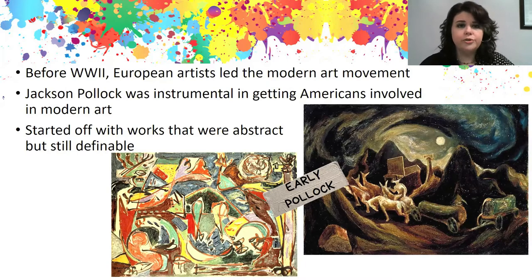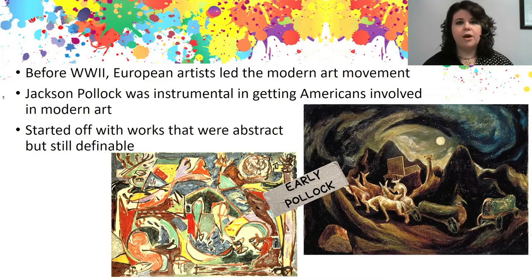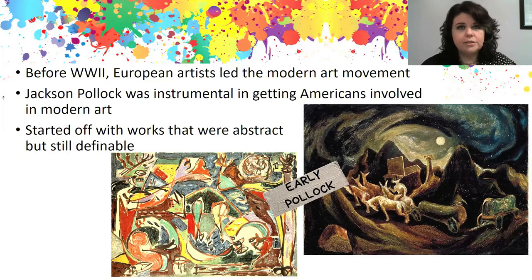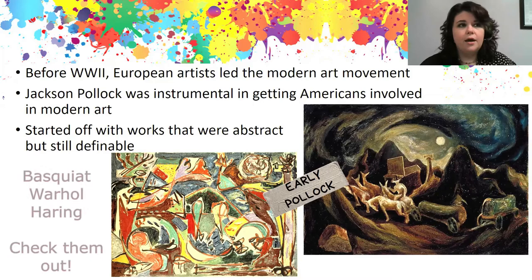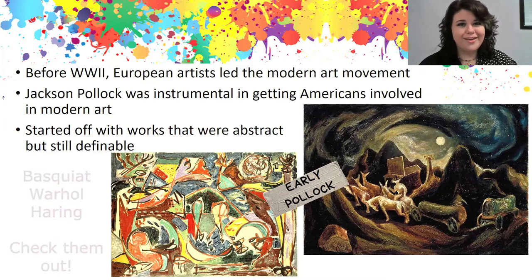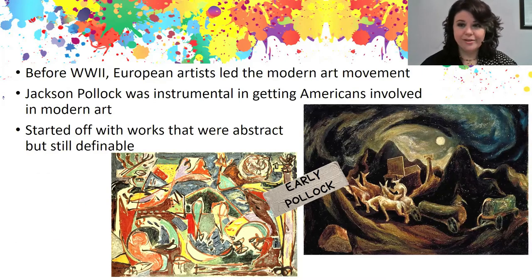Before World War Two, European artists led the modern art movement. But after the war, we had a lot of immigrants to the United States who brought with them their ideas about art and European influences. Jackson Pollock was instrumental in getting Americans involved in modern art and helping jumpstart that movement here in this country. Other American modern artists like Jean-Michel Basquiat, Andy Warhol, and Keith Haring can all credit Jackson Pollock with helping to get the movement off the ground here.